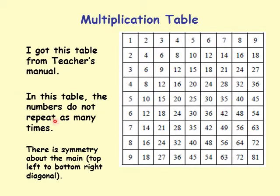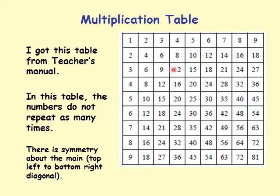In the multiplication table, numbers do not repeat as often. There is only one 1; 2 happens twice; 4 shows up in a few places; 81 happens only once; 64 only once; 56 happens a few times. There is a main diagonal from top-left to bottom-right, and the table has symmetry around this diagonal — 2 here and 2 there, 3 here and 3 there, and so on.